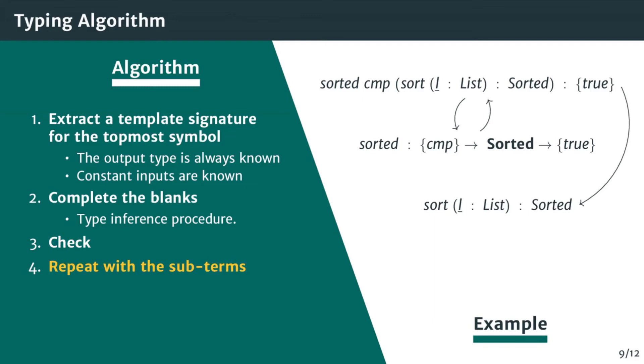And then we repeat the same procedure with the sub-term. Here we need to check sort L. We again extract the template signature for sort. Here we already have all the type information about sort, we just need to check it. The algorithm stops when all the types have been found or when a type error occurs when there is a contradiction. Of course, everything is built on top of our type inference procedure, which has been able to find the regular language of sorted lists. Let's see how this procedure works.